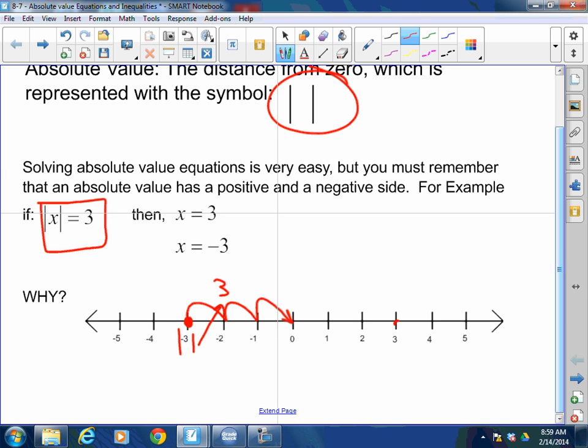If x is 3, that's also 1, 2, 3 away from zero. So the absolute value of 3 is also 3. Absolute value always has a positive and a negative root. Always remember that.